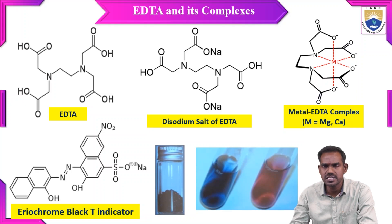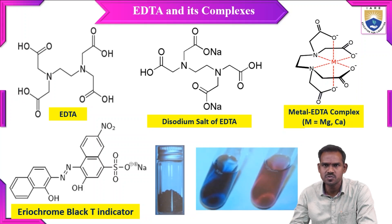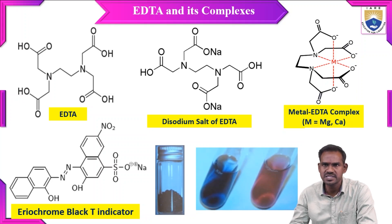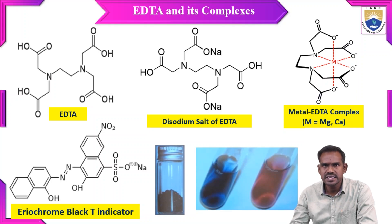The colors shown in this slide: free EBT is a blue solid, and when dissolved in water it gives a blue solution. When EBT is added as indicator, it forms a wine-red colored complex with the hardness-causing cations.